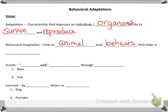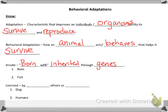A behavioral adaptation is how an animal acts and behaves that helps it survive. An innate behavior is something they're born with — it's inherited through genes. Bees being able to fly, fish being able to swim — those are things they know how to do from the very beginning; nobody taught them.